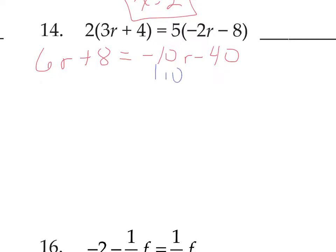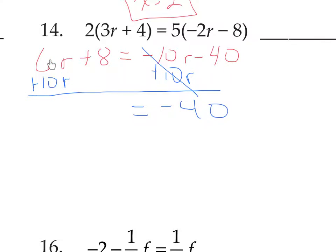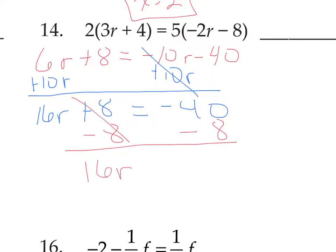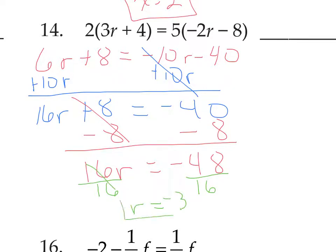Adding 10r takes the r's off the right; we only have negative 40 left there. 6r plus 10r makes 16r, and we still have plus 8. Get rid of the plus 8 by subtracting: 16r equals negative 48. Negative 40 minus 8. Divide by the coefficient 16: r equals negative 3. 48 divided by 16 is 3, and a negative divided by a positive makes negative 3.